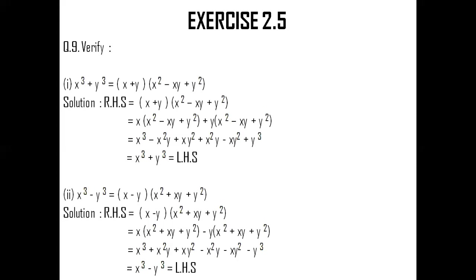My RHS is x minus y into x square plus xy plus y square. As I did with the previous sum, I will multiply my x with the entire bracket, so x is multiplied with x square plus xy plus y square. And then minus y also gets multiplied with x square plus xy plus y square. As you can see in the fourth line of the solution for question number two, I have x cube plus x square y plus x y square minus x square y minus x y square minus y cube. On simplification, x square y and minus x square y get cancelled out. Plus x y square and minus x y square also get cancelled out. So I am left with x cube minus y cube, which is actually my LHS.